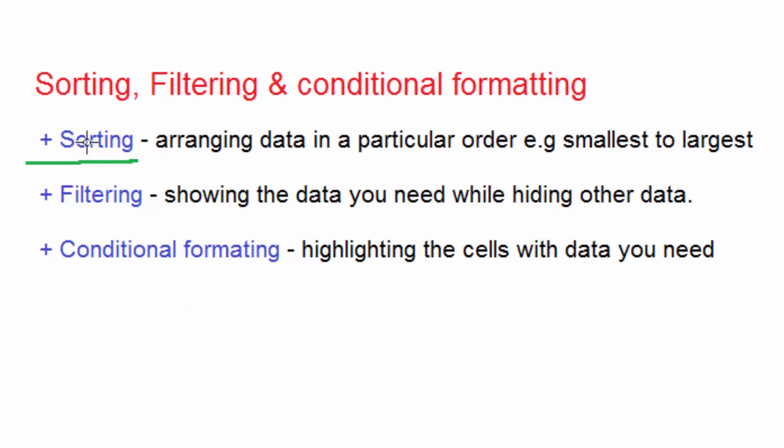The next thing is what we call filtering. As the name suggests, by filtering we simply mean we are hiding what we don't want and showing only what we want. For example, if I have a very large list of boys and girls — maybe 1,000 students — and I only want girls, I will hide the boys and only girls will remain on the Excel sheet. This process of hiding what you don't want and showing what you want is what we call filtering.